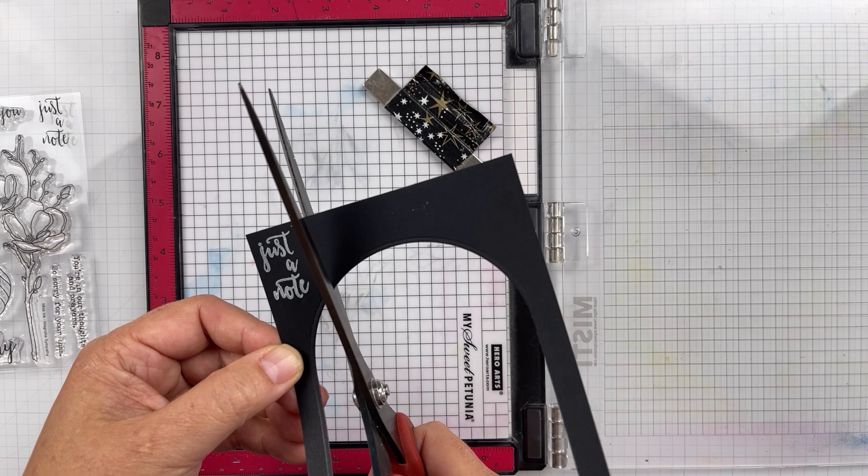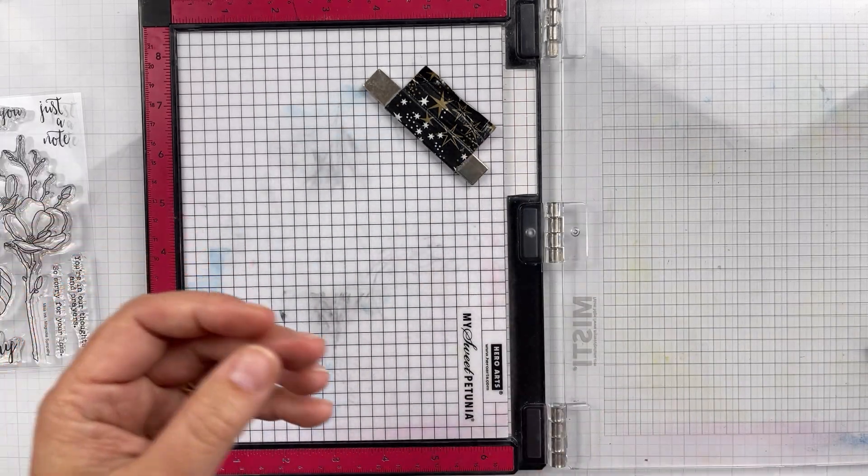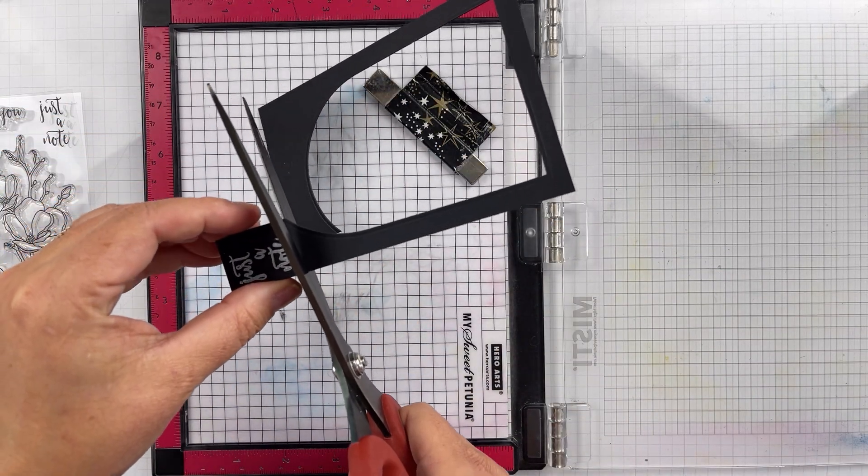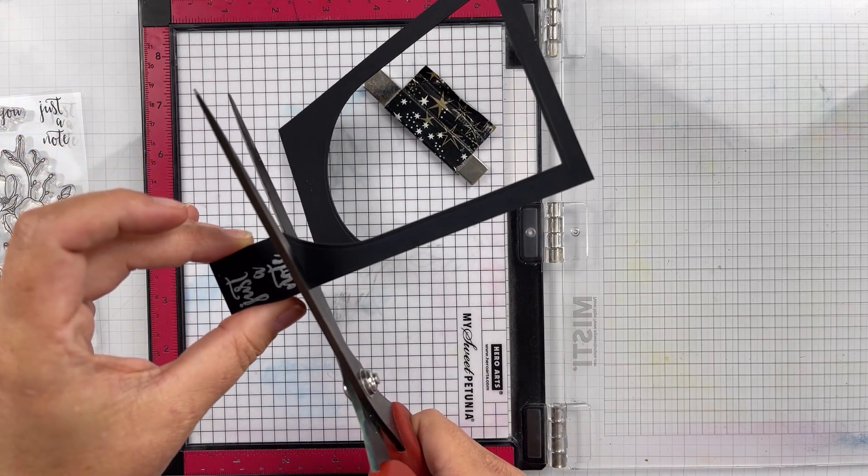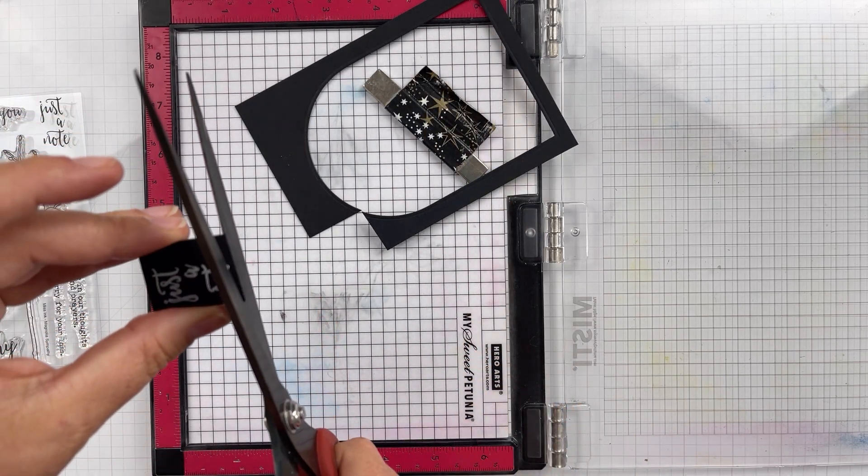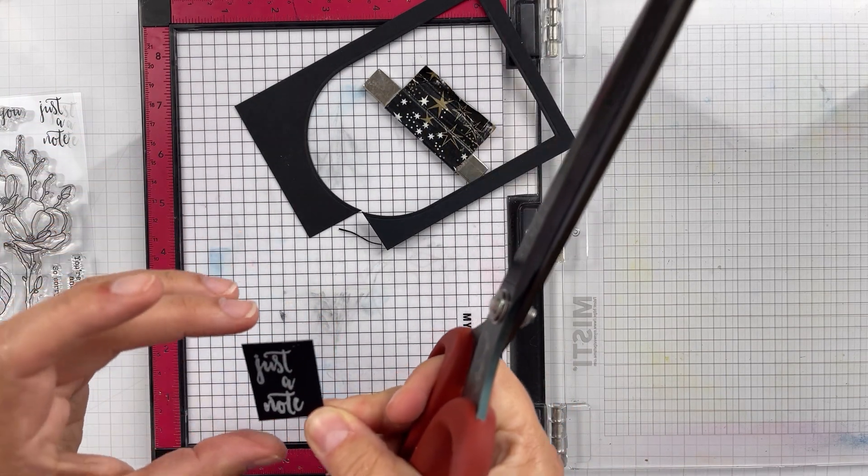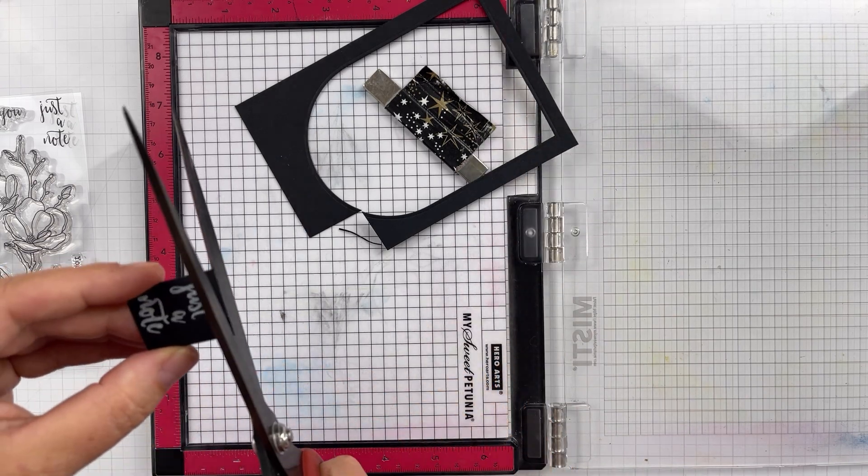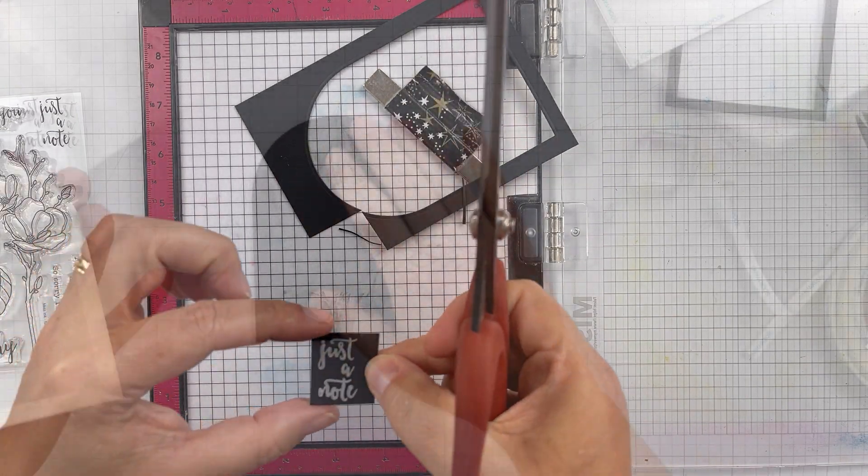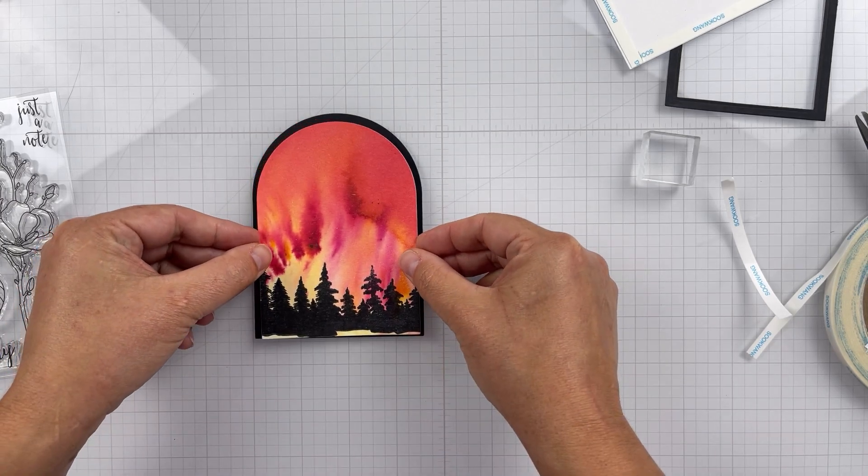Now, off camera, I did heat set this so that I could just quickly keep moving. If you don't want to heat set it, obviously you can just throw some clear embossing powder on there, or just set it off to the side to dry and give it some time to dry.